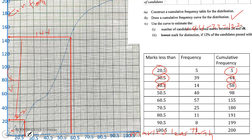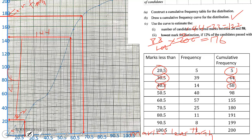Now we estimate the lowest mark for distinction if 12 percent of the candidates passed with distinction. If 12 percent pass, it means 88 percent did not, so we calculate 88 over 100 times the total number of 200, giving us 176. We trace 176 from the cumulative frequency axis onto the marks axis. Reading from the curve, this gives us 67.5, so 67.5 marks is the lowest mark for distinction.